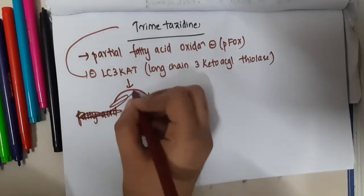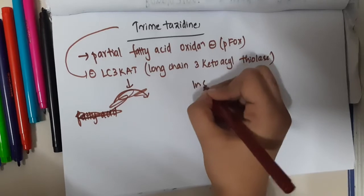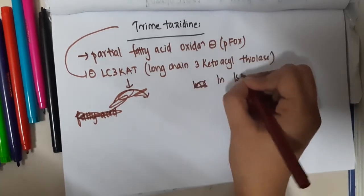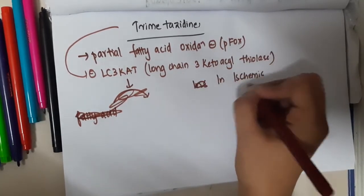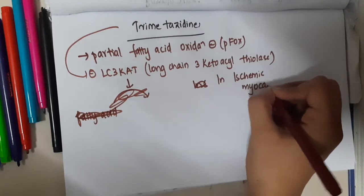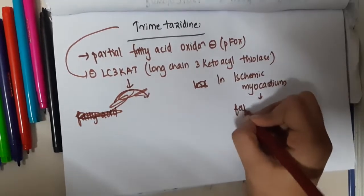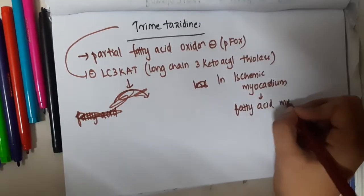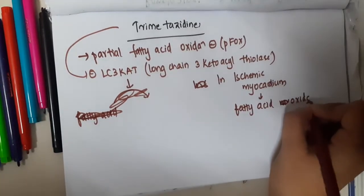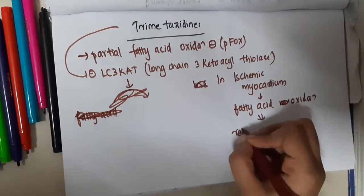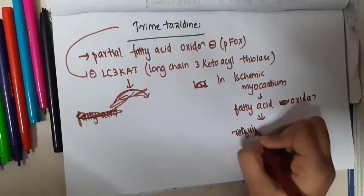What happens is whenever there is ischemic myocardium, there is mainly fatty acid metabolism. This fatty acid oxidation will occur, and this fatty acid oxidation requires a large amount of oxygen.